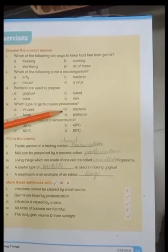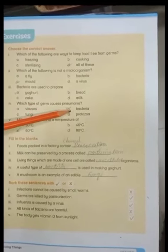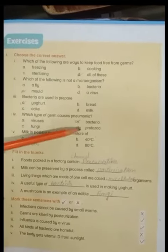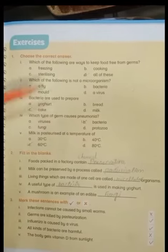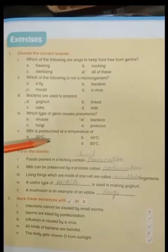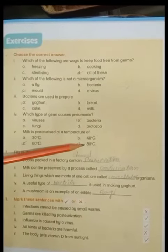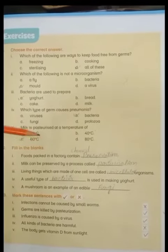Which type of germs causes pneumonia? The options are viruses, bacteria, fungi, or protozoa. Bacteria causes pneumonia. Milk is pasteurized at a temperature of 68 degrees centigrade to get rid of germs.